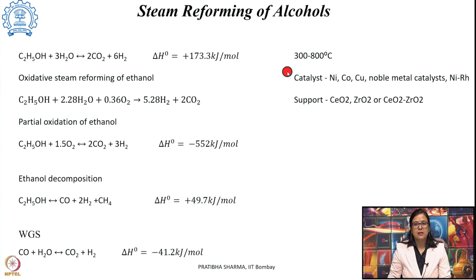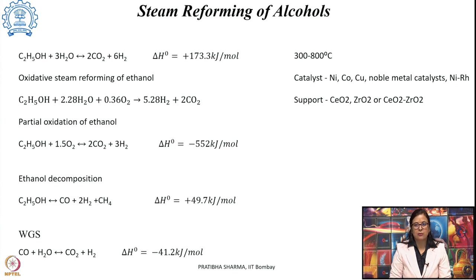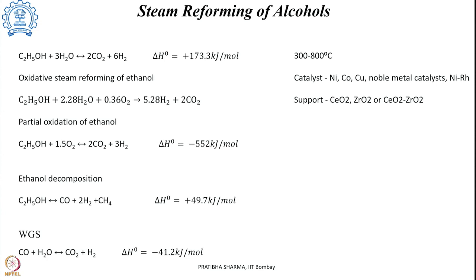The reaction conditions for ethanol reforming are 300 to 800 degrees centigrade in the presence of catalysts like nickel, cobalt, copper, and other noble metals. Bimetallic catalysts like nickel on rhodium have been found to be the best catalysts on supports like cerium oxide, zirconium oxide, or a cerium oxide and zirconium oxide combination. This is what we have seen about the steam reforming of higher hydrocarbons, along with the steam reforming of methanol and ethanol.